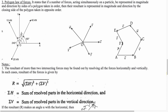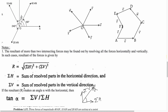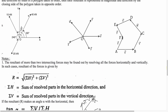That is the graphical method. Next is the analytical method. For the resultant force, the formula is: R equals the square root of (summation H squared plus summation V squared), where summation H is the sum of resolved parts in the horizontal direction and summation V is the sum of resolved parts in the vertical direction.